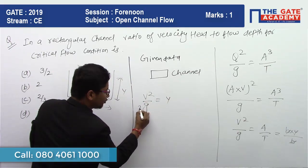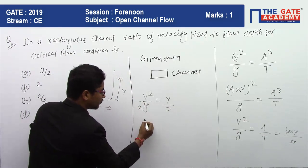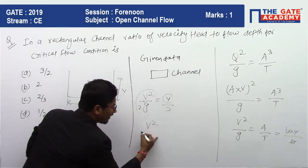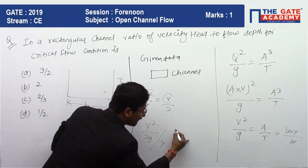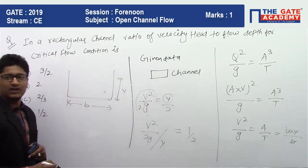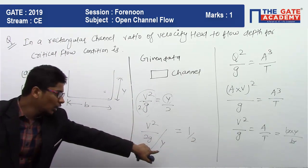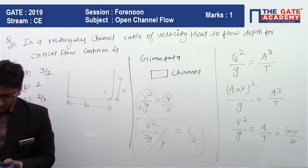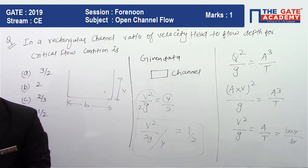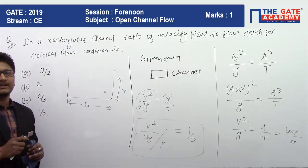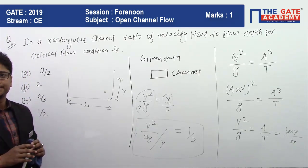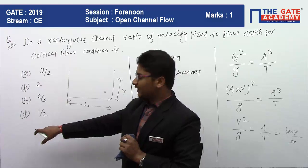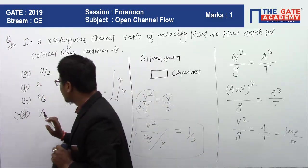Dividing both sides by 2 gives v² / 2g = y / 2, so velocity head divided by flow depth equals 1/2. The answer is option (d): 1/2. This is a straightforward one-mark question.